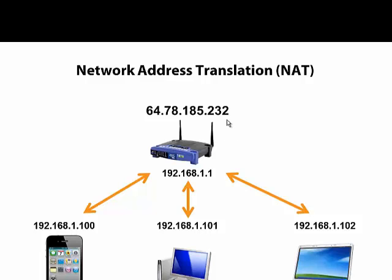Internally, you use a lot of these private IP addresses. A process called NAT, or Network Address Translation, takes these addresses as they exit your house and exit your router, and converts them into your external public IP address. As traffic comes back in, it converts them back to the correct internal IP address.